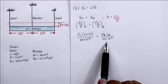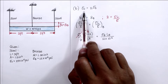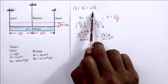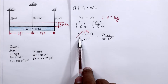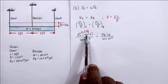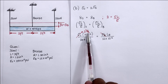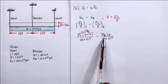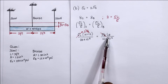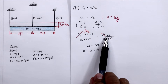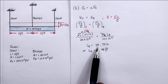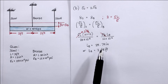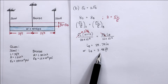Since the condition is that the stress of steel is twice the stress of bronze, we replace the stress of steel with twice the stress of bronze. Since stress of bronze is a common term on both sides of the equation, it cancels out. The remaining unknown is the length of bronze. Solving for LB gives 29.79 inches, or in terms of feet, 2.48 feet.